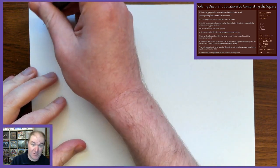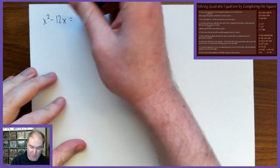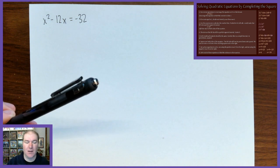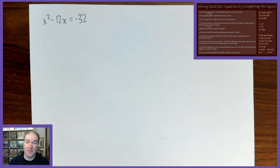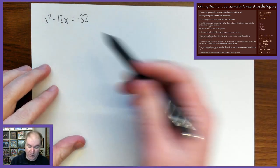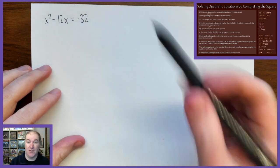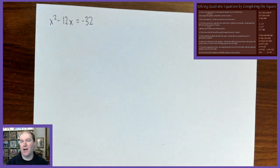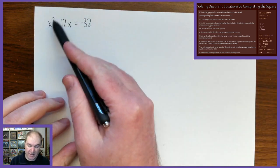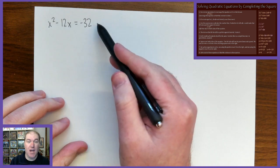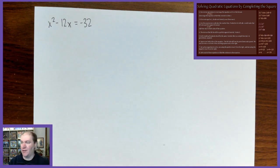The first example is x squared minus 12x equals negative 32. To complete the square you want the equation in a slightly different format than what we usually use. Usually we want it equal to zero, but with completing the square you want the constant — the plain old number — to be all by itself. Step one says use inverse operations to rearrange the equation so the x squared term and x term are on the left and the constant is on the right. Step one is already done for us.